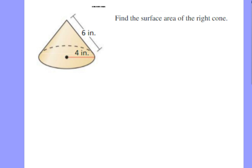So let's take a look here. So we know our surface area, our surface area is equal to πr² for the circular base plus πr times the slant height, πr times the slant height.